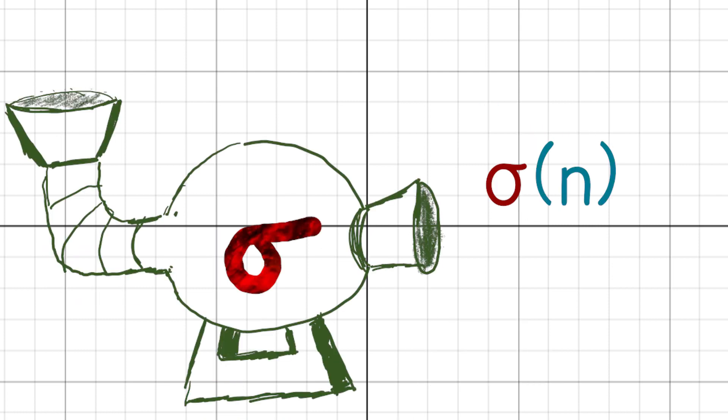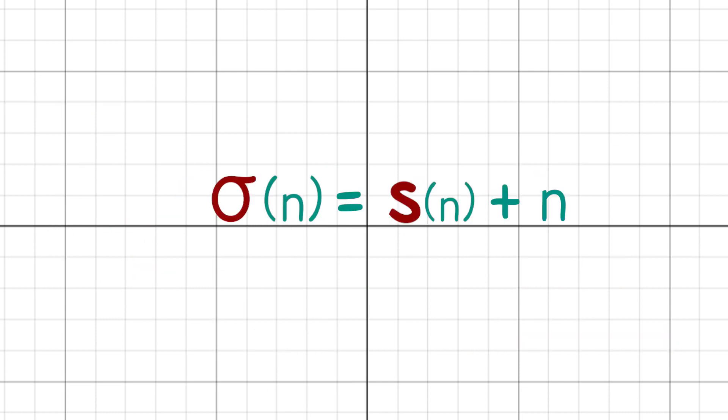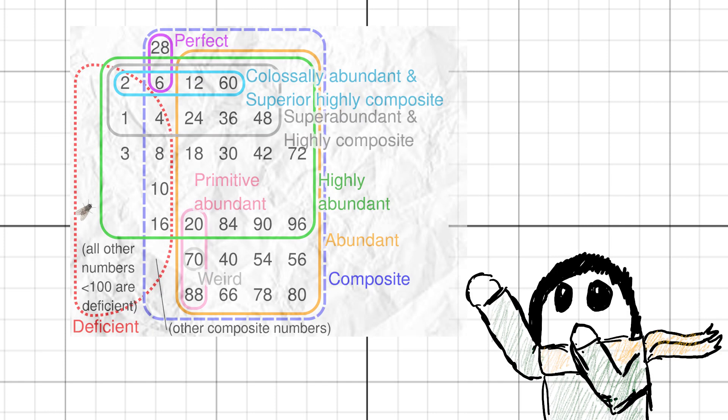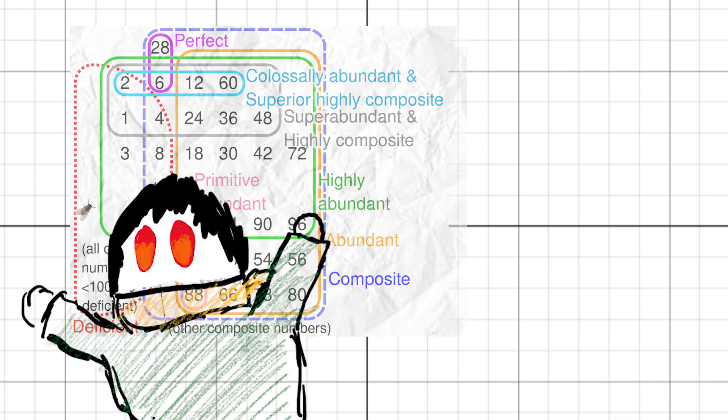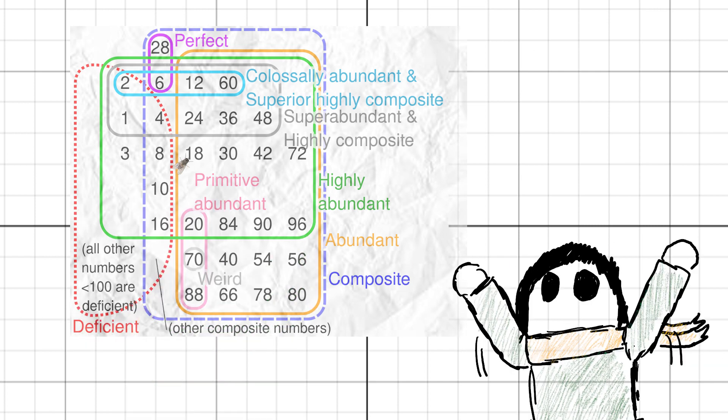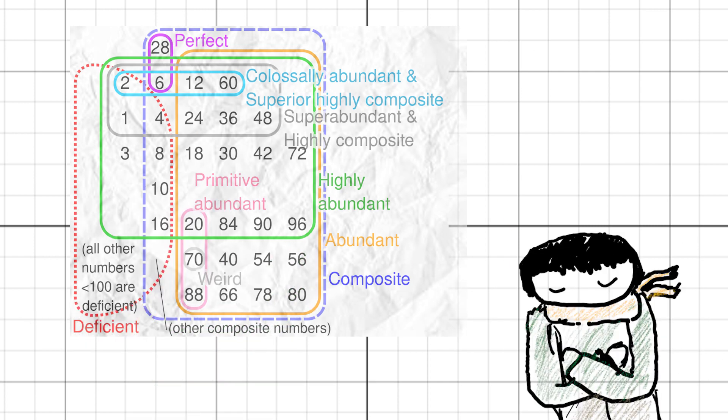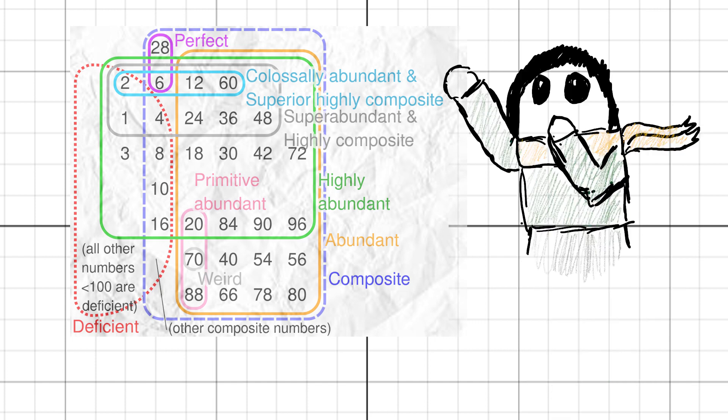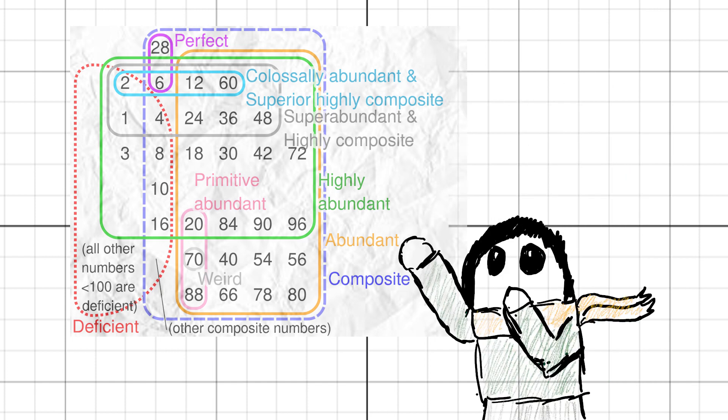Another function is sigma of n. Sigma is the Greek s, and sigma of any natural number is the sum of all the divisors. So this time we are including the number itself. Sigma of n is the previous quantity, the aliquot sum of n, plus n. You might have noticed something in this diagram. Not the fly. Where did that come from? You might have noticed the word abundant.